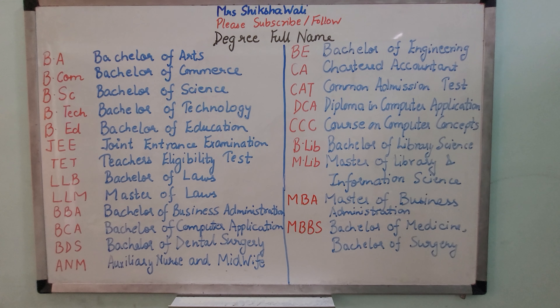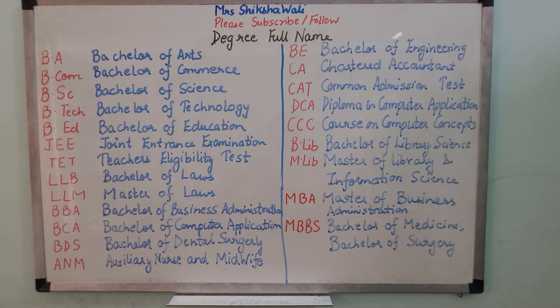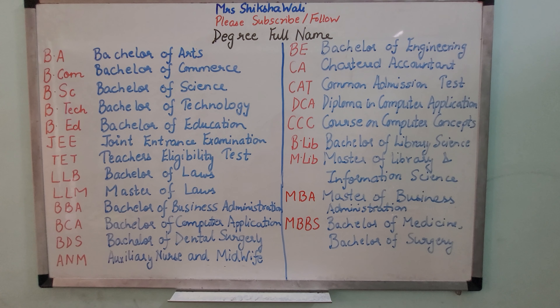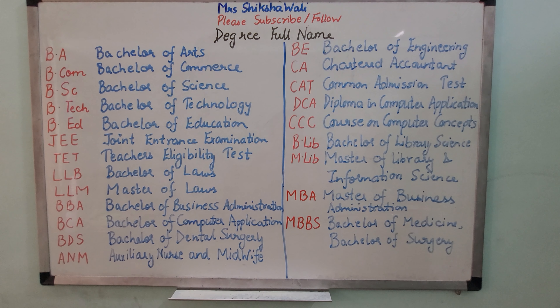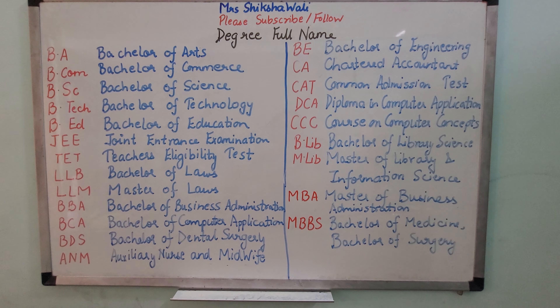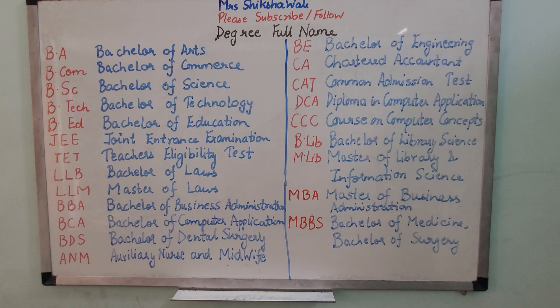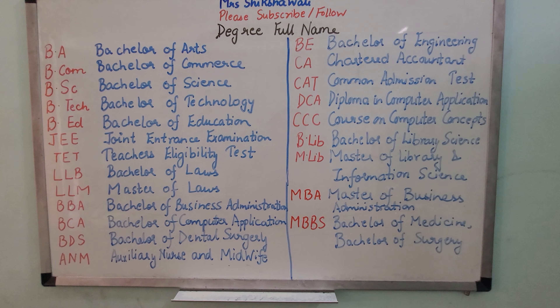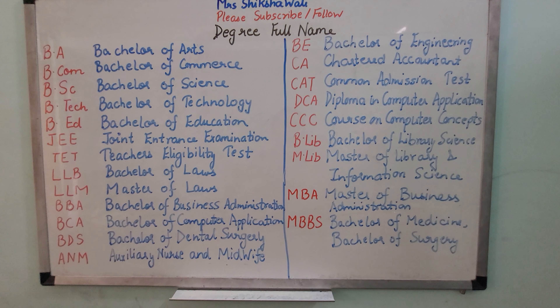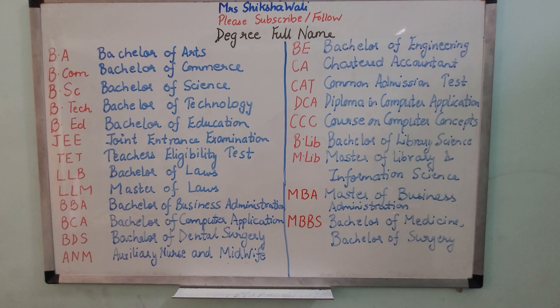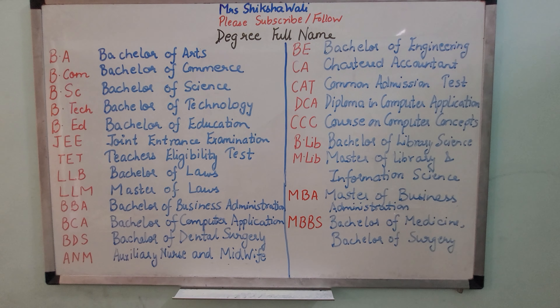BA is Bachelor of Arts, BCom is Bachelor of Commerce, BSc is Bachelor of Science, B.Tech is Bachelor of Technology.